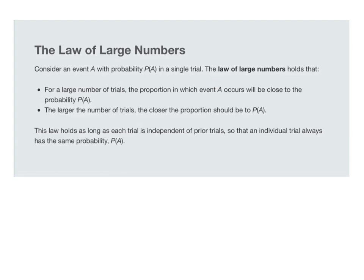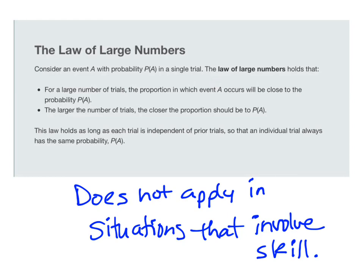Another observation is that this law does not apply in situations that involve skill. For example, if somebody is just learning how to do cartwheels, their probability of successfully doing a cartwheel is not necessarily going to approach one-half over time. It may be terrible at first, but as they improve, the probability might eventually approach one. Skill means the events are not independent because you're building skills as you perform those events, and that affects the outcome of the next event.